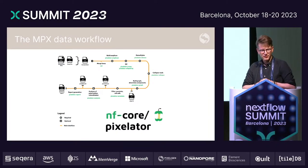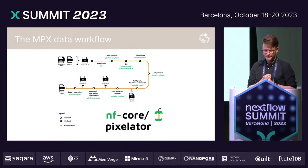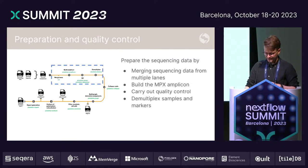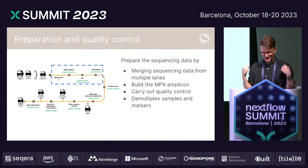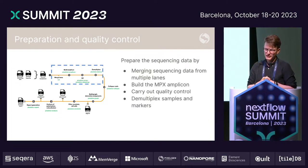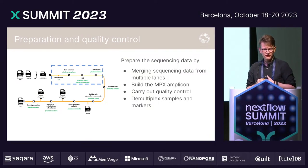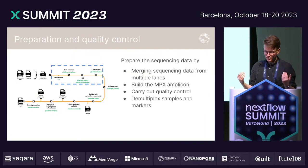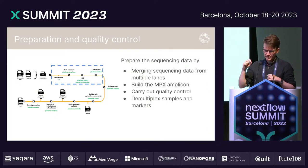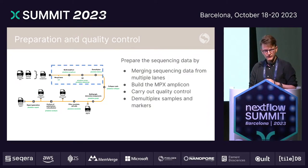I will use a map analogy to explain how we analyze the data step by step. The first steps of the process: we take the sequencing data in FASTQ format along with some metadata about the samples. We concatenate the data if it's been run across multiple lanes, then build our amplicon depending on the sequencing configuration. We do quality control on these amplicons, then demultiplex so that we get a single file for each sample and marker — essentially 80 files per sample with the current panel.